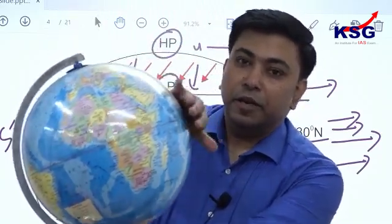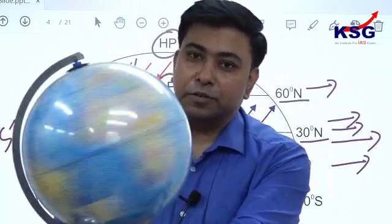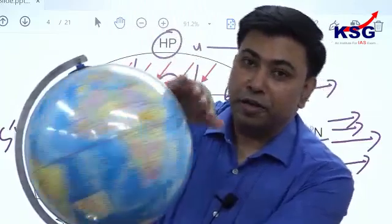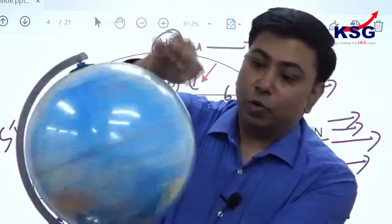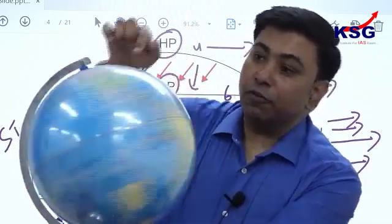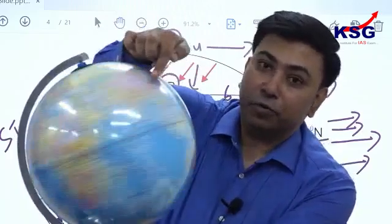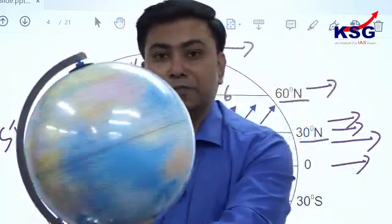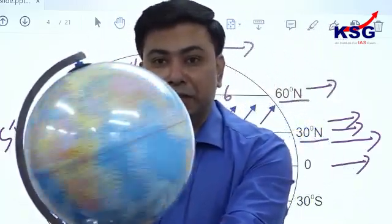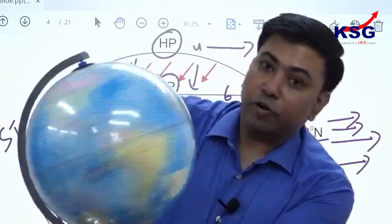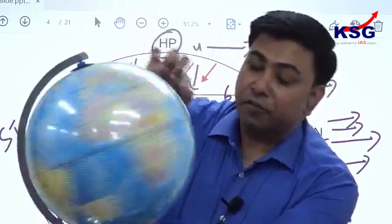Looking at the globe: Earth rotates anticlockwise in the west-to-east direction. Winds flowing from low to high latitudes will always move forward toward the east. Winds flowing from high to low latitudes will always lag behind toward the west. This is the key rule: lag behind toward west when flowing from high to low latitudes; move forward toward east when flowing from low to high latitudes.